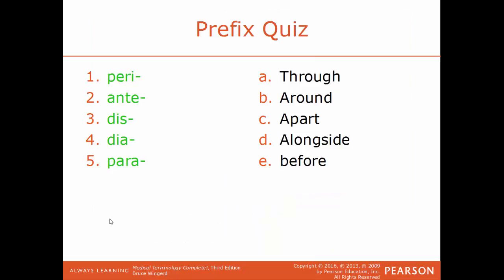We'll end this chapter and end this video with our matching quiz. The five prefixes on the right: peri, anti, dis, di, or para, and they will match up to either the words through, around, apart, alongside, or before. So the first one, peri, would mean around or surrounding. Anti means before. Dis means apart or to separate, like in dissection. Di means through. And para means alongside. So here are all the answers to this short prefix quiz.